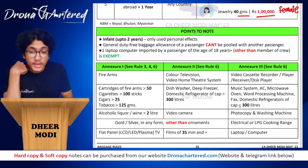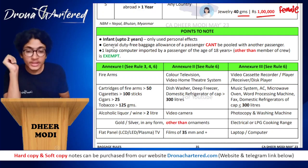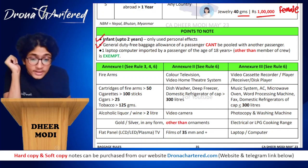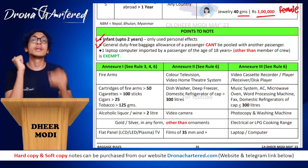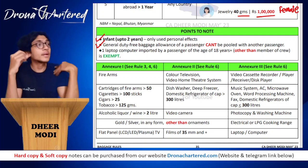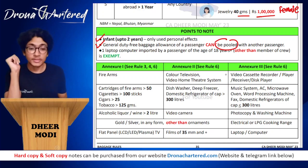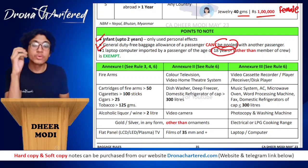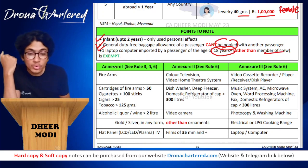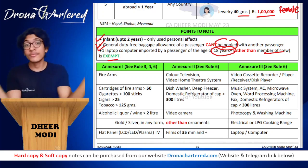Points to note: For infants up to two years, only used personal effects are allowed — no other exemption. General duty-free baggage allowance of one passenger cannot be pooled with another passenger. For example, a woman with 30 grams of gold cannot club her extra 10 grams with her husband's allowance — that is not allowed. Additionally, one laptop or computer imported by a passenger aged 18 years or more (other than crew members) is exempt from duty — only one laptop; if you bring ten, only one is exempt.